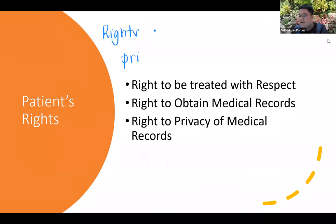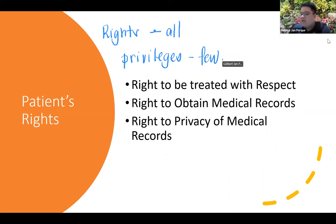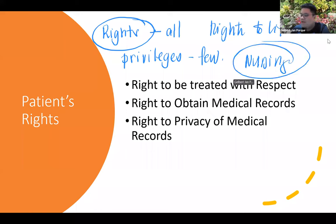Your rights are true to all, while privileges are granted only to a few. For example, everybody has the right to life — we all have the right to live. But when it comes to nursing, only a few are privileged to practice being a nurse. Privileges can be taken from an individual; however, rights cannot be taken from the individual.